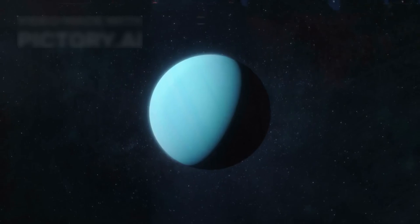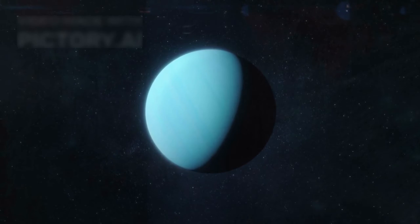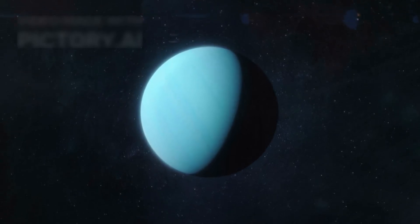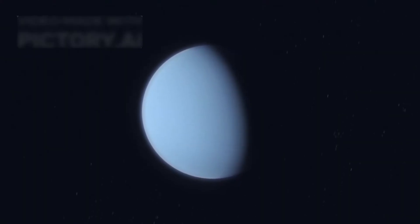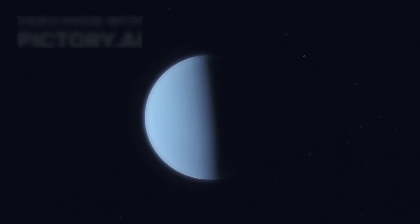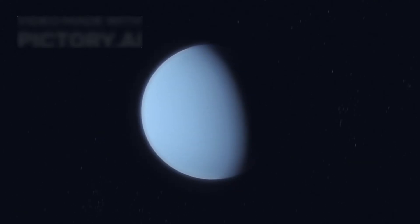Voyager 2, in particular, achieved even greater milestones by becoming the first spacecraft to approach Uranus in 1986 and Neptune in 1989. To this day, it remains the only probe to have visited those planets, surprising scientists with astonishing discoveries in previously unexplored regions.